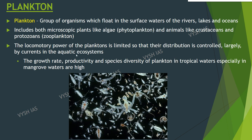Phytoplankton and zooplankton are found in all aquatic ecosystems except swift moving waters. The growth rate, productivity and species diversity of plankton in tropical waters, especially in mangrove waters, are high.